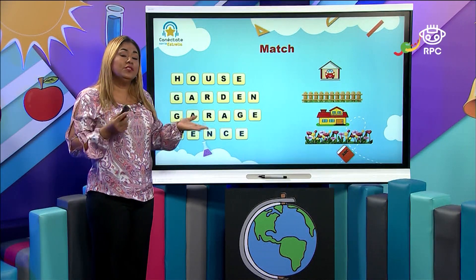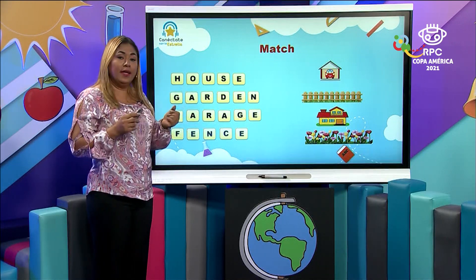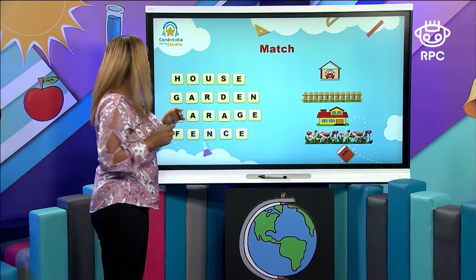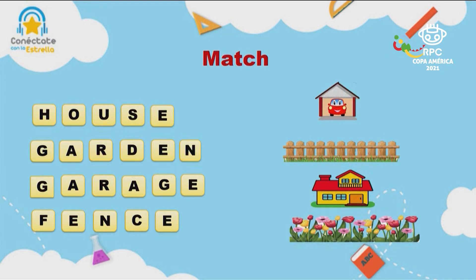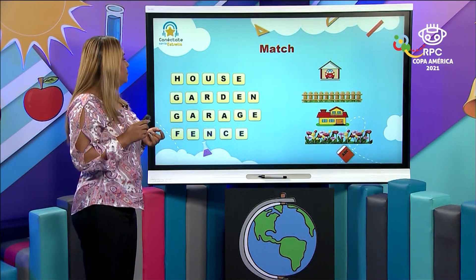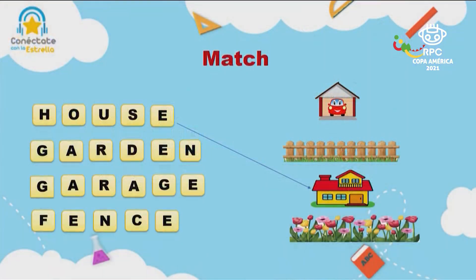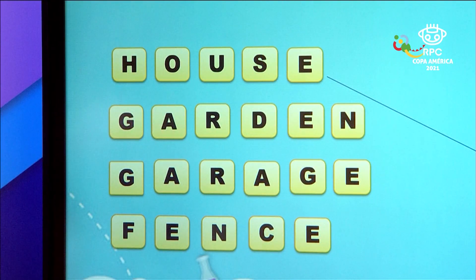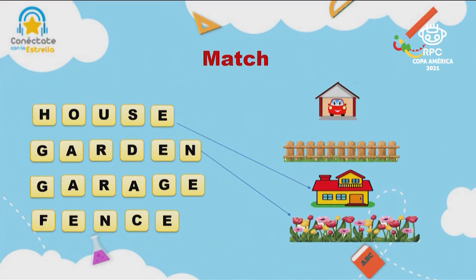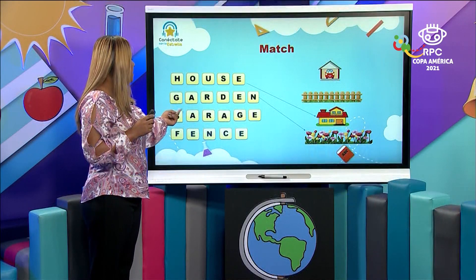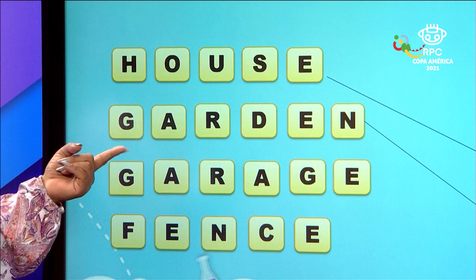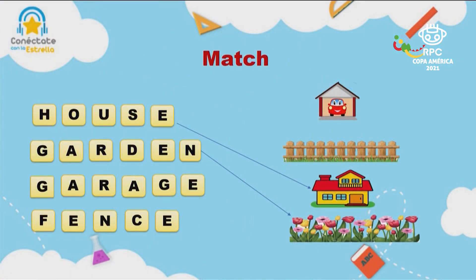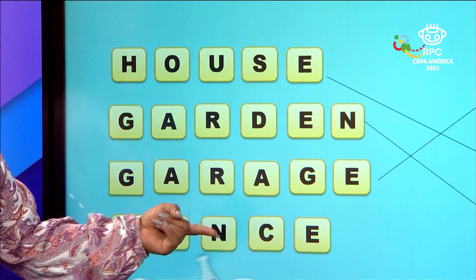Now that we have reviewed the external parts of the house, let's match the word and the picture. But before we start, let's review the alphabet. So let's spell the word. G-A-R-D-E-N, garden. G-A-R-A-G-E, garage.